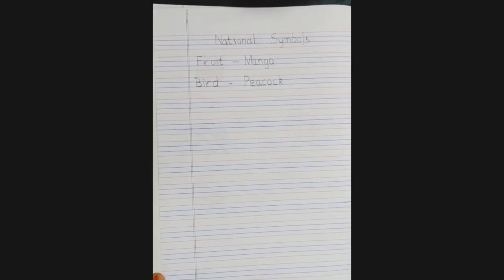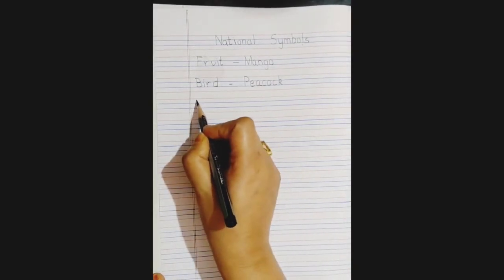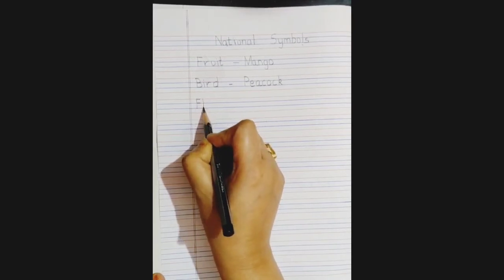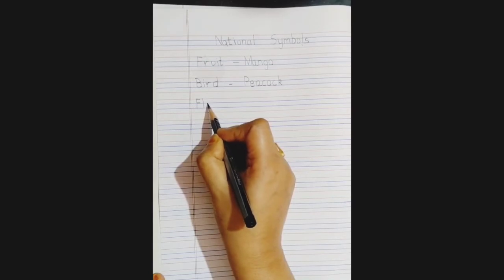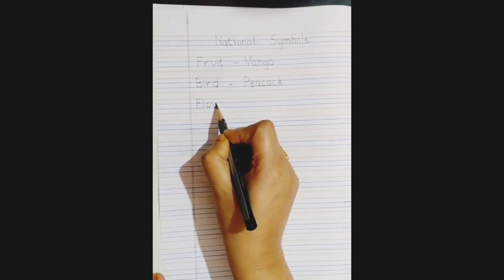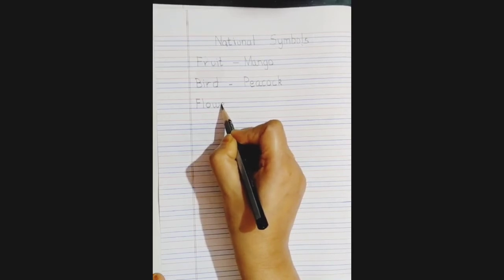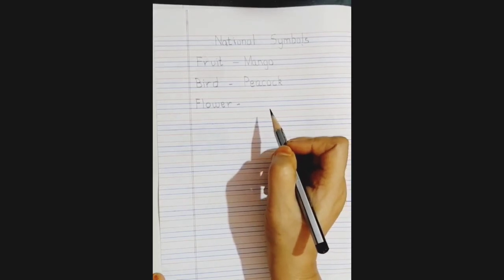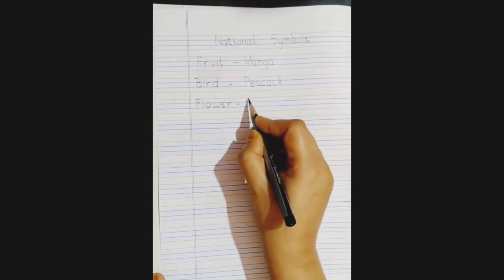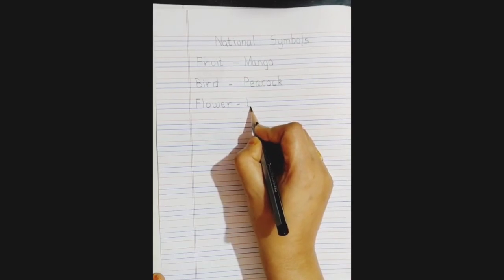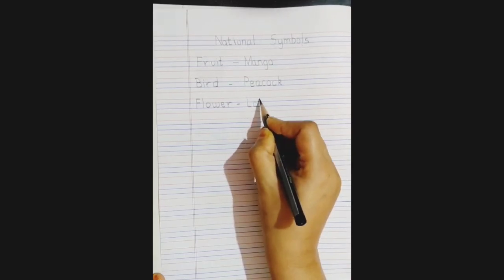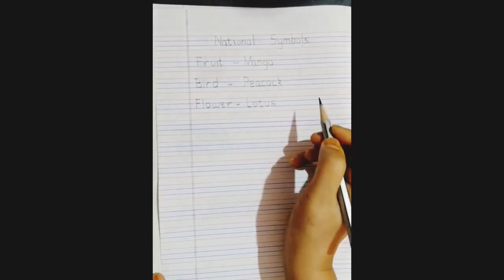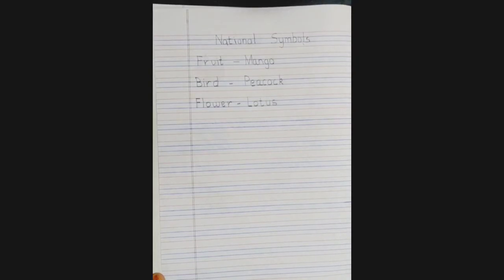Now we move to the next one. That is flower, which is the national flower. So first we'll write a big F, L, O, W, E and R. National flower. Which is the national flower? Yes, lotus. So we'll write lotus. L, O, T, U and S. Lotus. Now moving on to the next one.